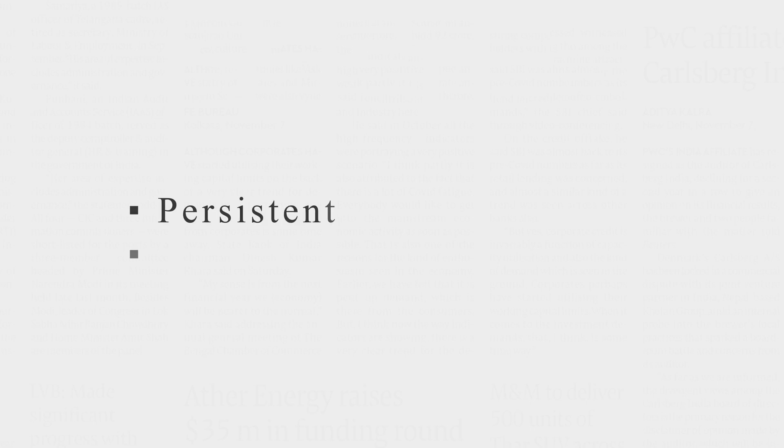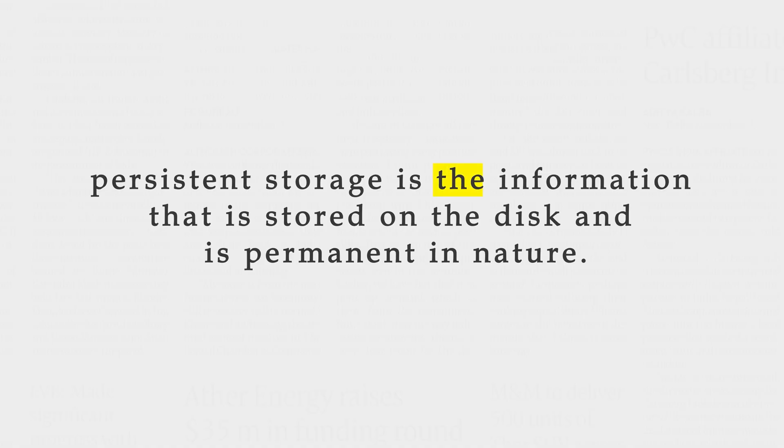In order to truly understand these two types of backup, you first need to understand the process of data storage in Oracle Database. In simplified terms, database stores data in two ways: persistent and transient. Persistent storage is the information that is saved on the disk and is permanent in nature. These are the information that database saves in data files as well as in archive redo logs and online redo log files.